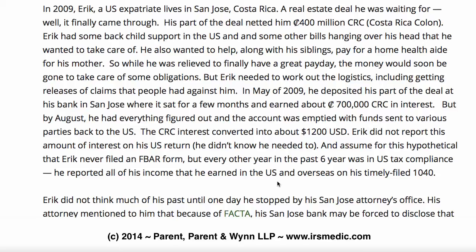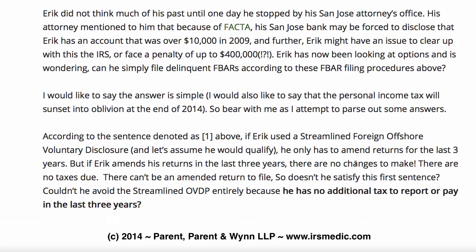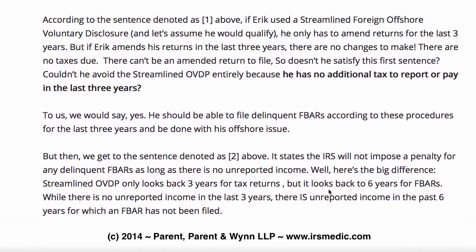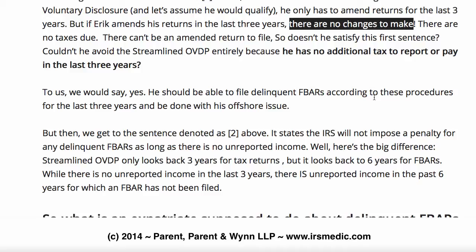So what he wants to know is: can he just file his missing FBARs and be done with it? Because in the last three years he has been fully compliant — he had no FBAR filing requirement and his taxes all properly reported his income. I hope you can see the issue here, because the answer isn't quite so simple. According to sentence one above, if Eric uses the streamlined offshore foreign voluntary disclosure — assuming he qualifies — he only has to amend returns for the last three years. There are no changes to make, no taxes due, and there can't be an amended return to file. So doesn't he satisfy that first sentence? Couldn't he avoid the streamlined OVDP simply because he has no additional tax to report or pay in the last three years?